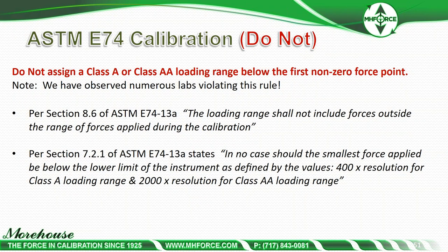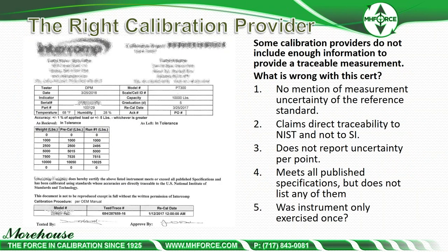Some calibration providers do not include enough information to provide traceable measurements. Looking at this cert: there's no mention of measurement uncertainty of the reference standard anywhere; it claims to be 'directly traceable to NIST' rather than to SI; it does not report uncertainty per point as required by ILAC P14 for accredited calibrations; and it makes the statement 'meets all published specifications' without listing any of them. There are also questions about whether the instrument was properly exercised.